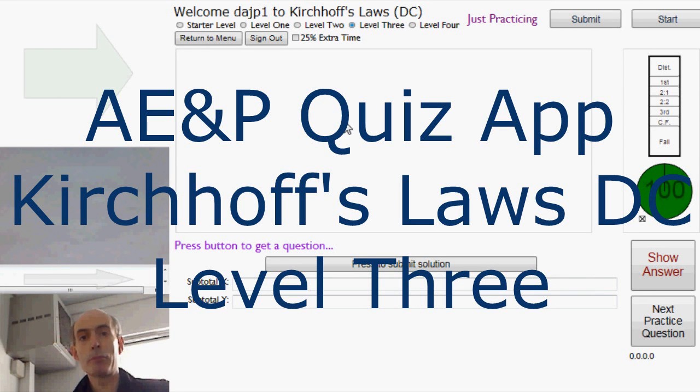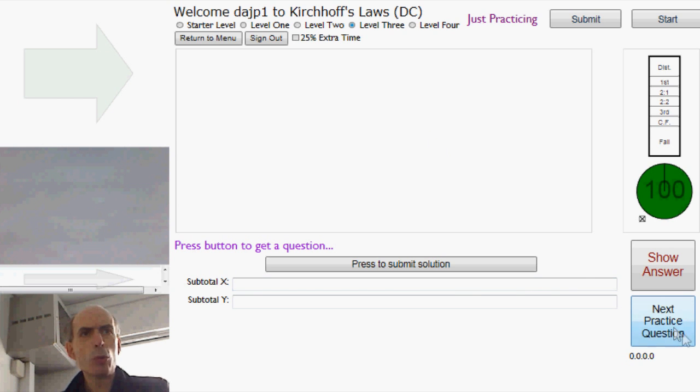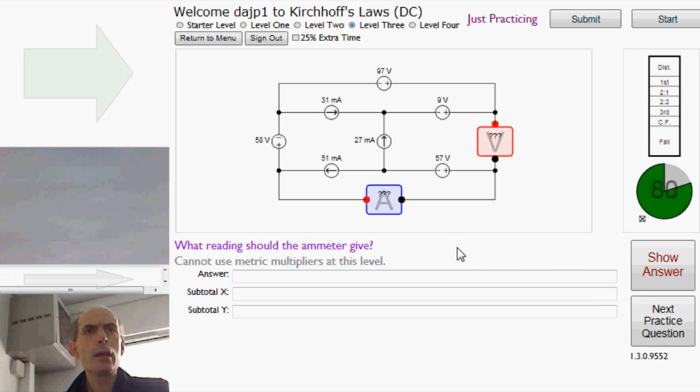This time, Level 3 of Kirchhoff's Laws. Now, things get a little bit more tricky here. Let's have a look at this one. What reading should the ammeter give?